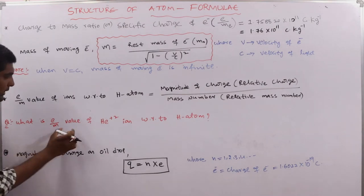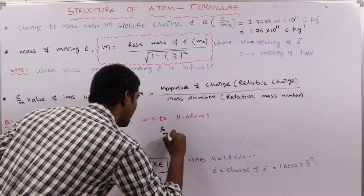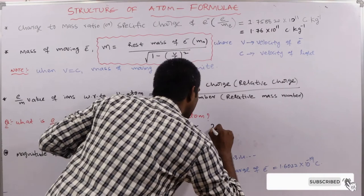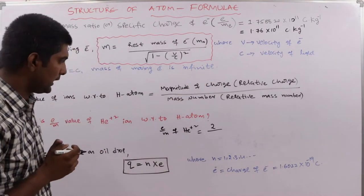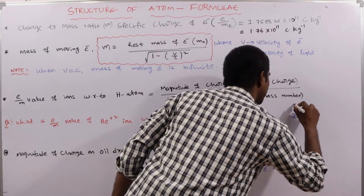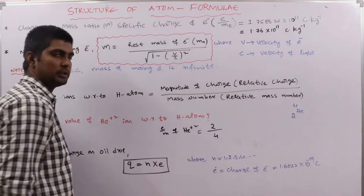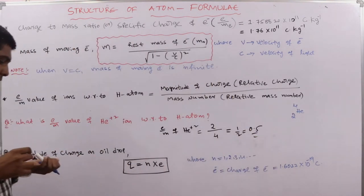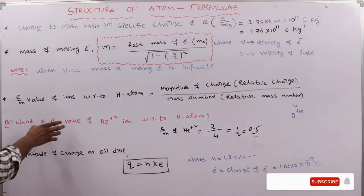For example, the e/m value of the helium²⁺ ion: the charge magnitude is 2, and the mass number of helium is 4. So e/m = 2/4 = 0.5. The charge-to-mass ratio of He²⁺ with respect to hydrogen atom is 0.5.